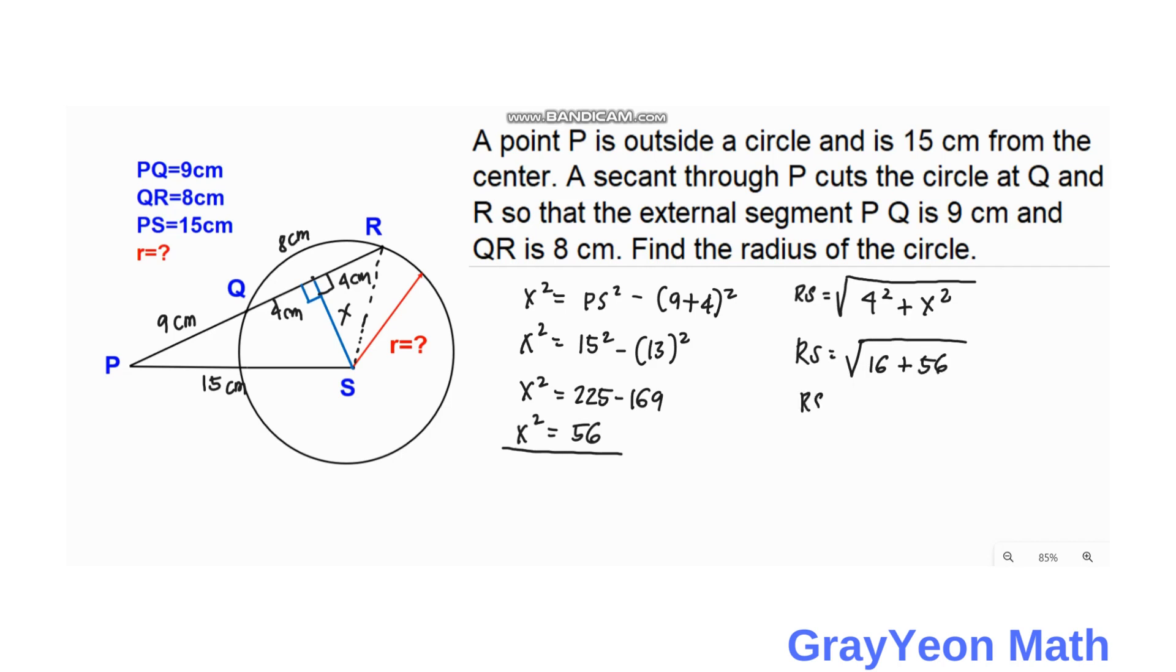So RS equals the square root of 72. 72 can be written as 36 times 2. So RS equals the square root of 36, which is 6, times the square root of 2. So we have 6√2 centimeters, and that is our answer.